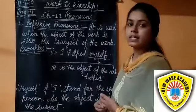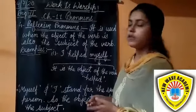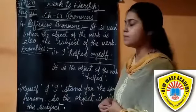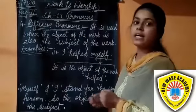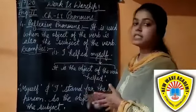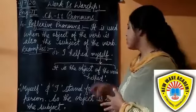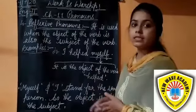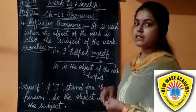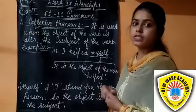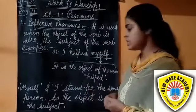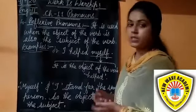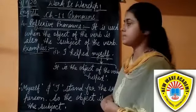Let's see another example: 'They hurt themselves during the game.' Here, 'themselves' is the object of the verb 'hurt,' and themselves and they stand for the same person. So the object is also the subject in this sentence.